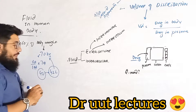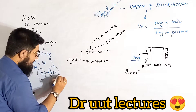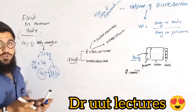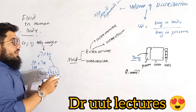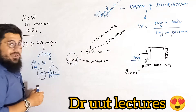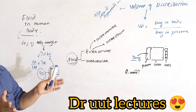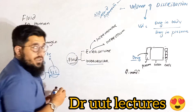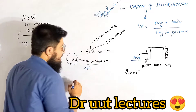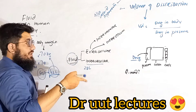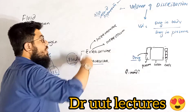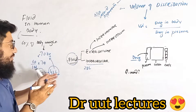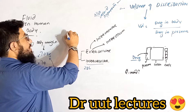Now, all 42 liters of this fluid are further divided into three portions. The very first and biggest portion — 28 liters — will reside inside the cell, which is called intracellular fluid. Then outside the cell, the remaining fluid is distributed further.